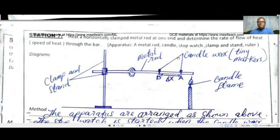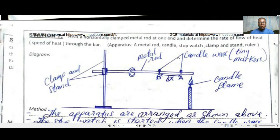The first thing to note is that we've been asked to calculate the speed of heat flow. The formula we are going to use in our inference is: speed equals distance over time. So we will be taking note of the distance between two points and the time intervals depending on what happens during the experiment.